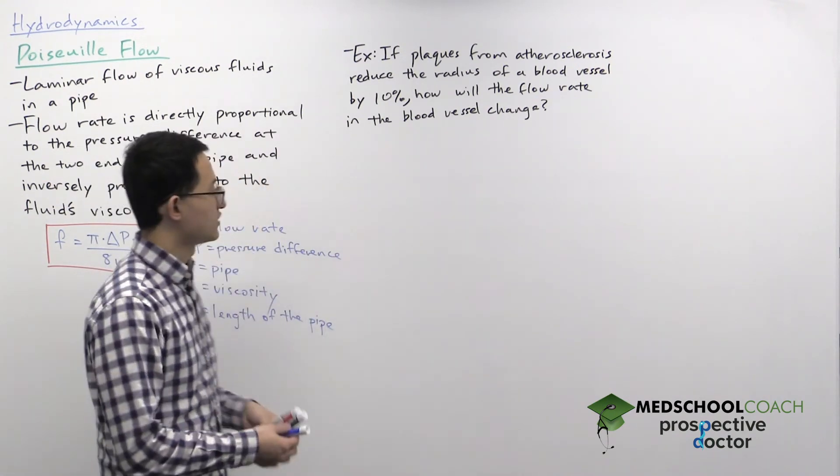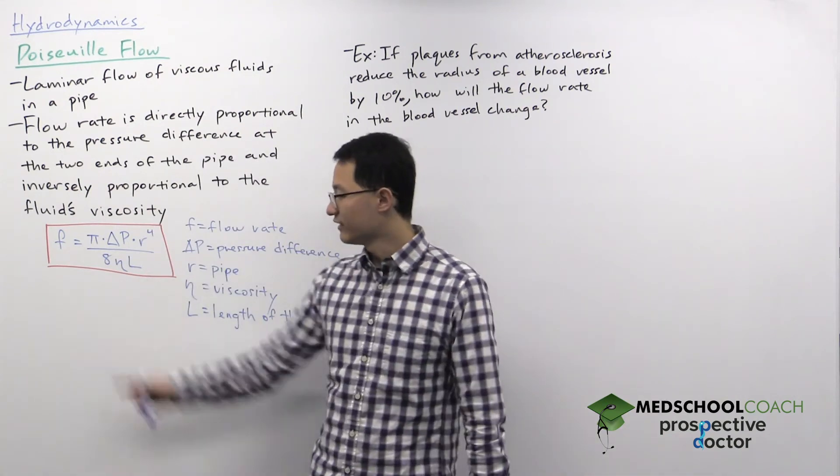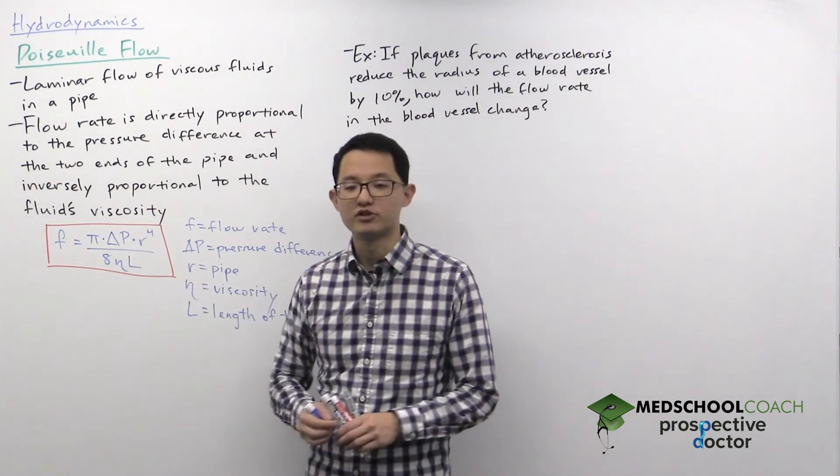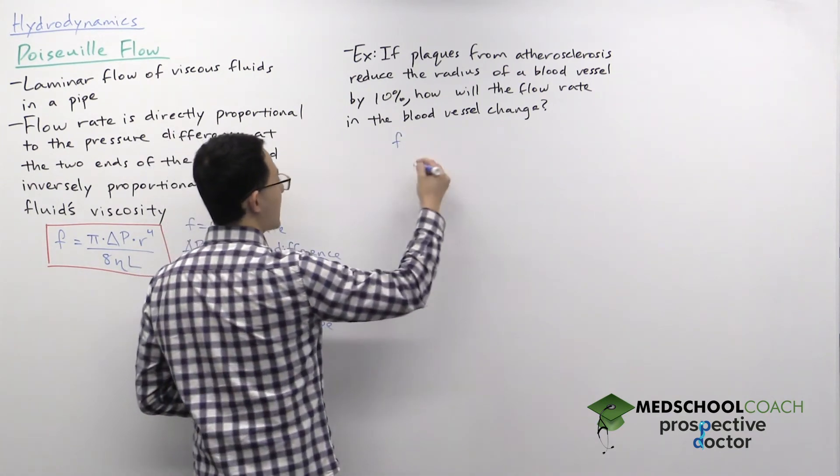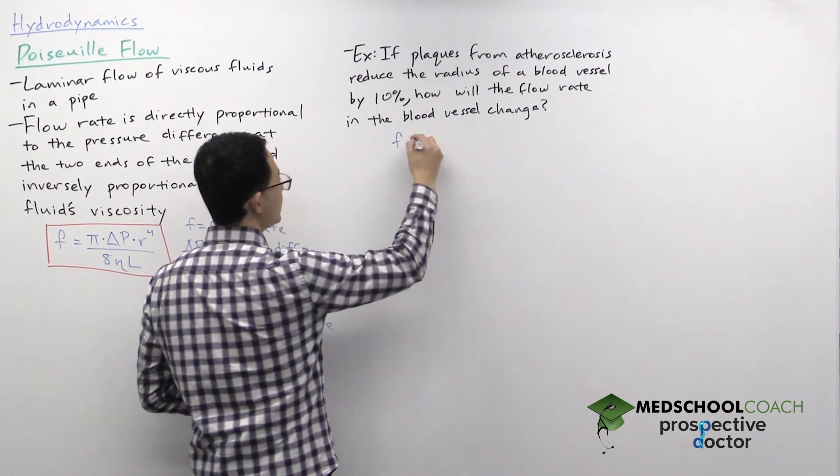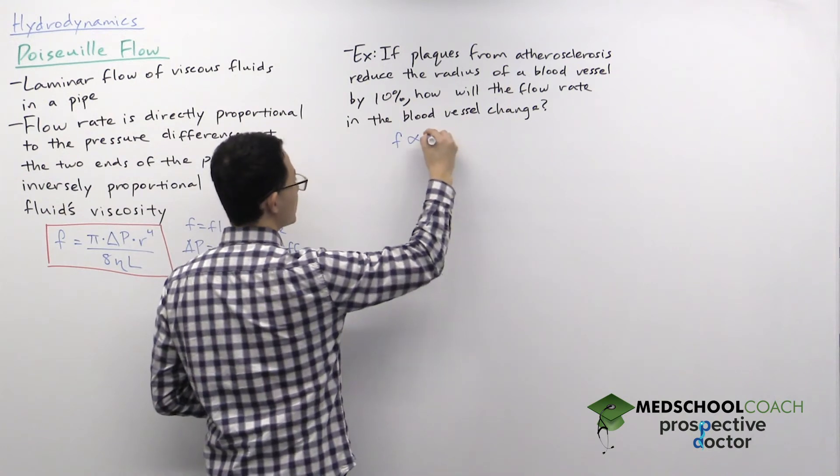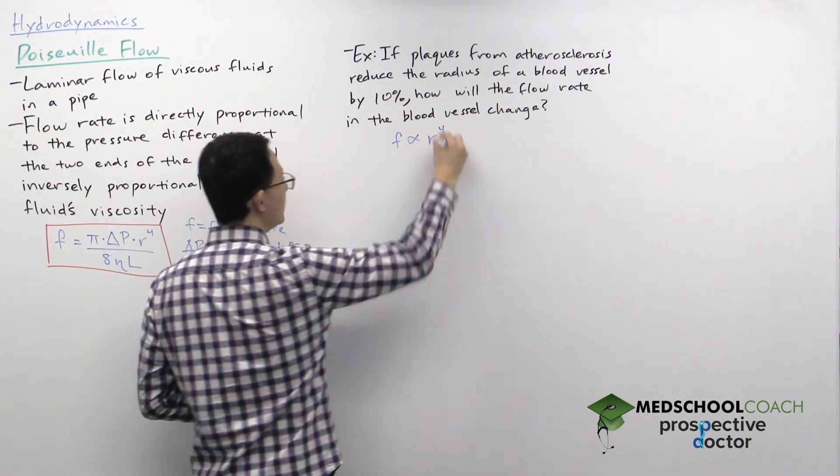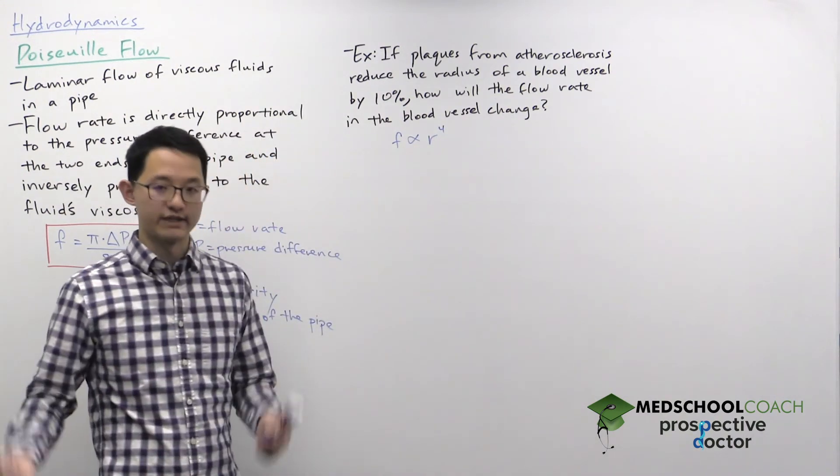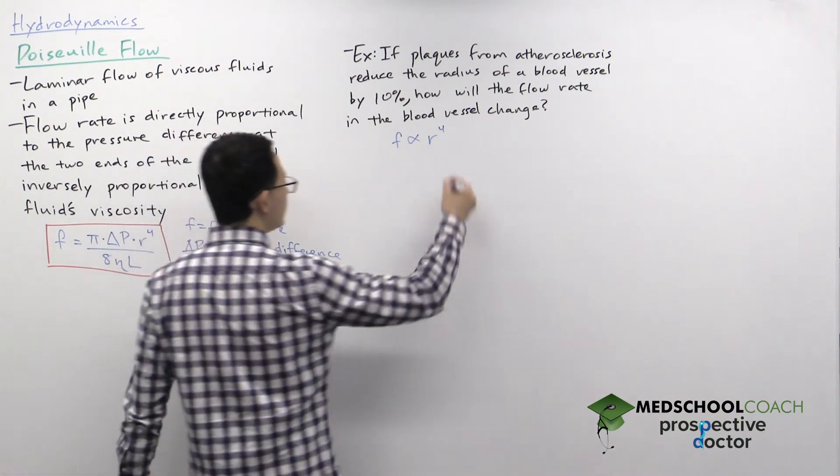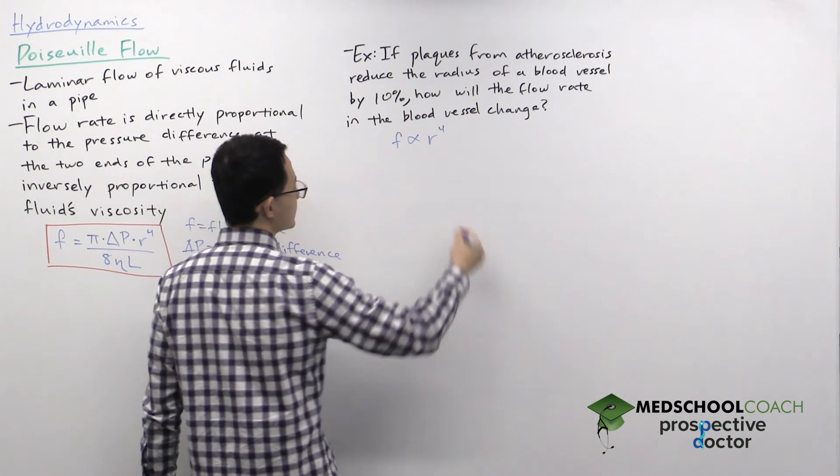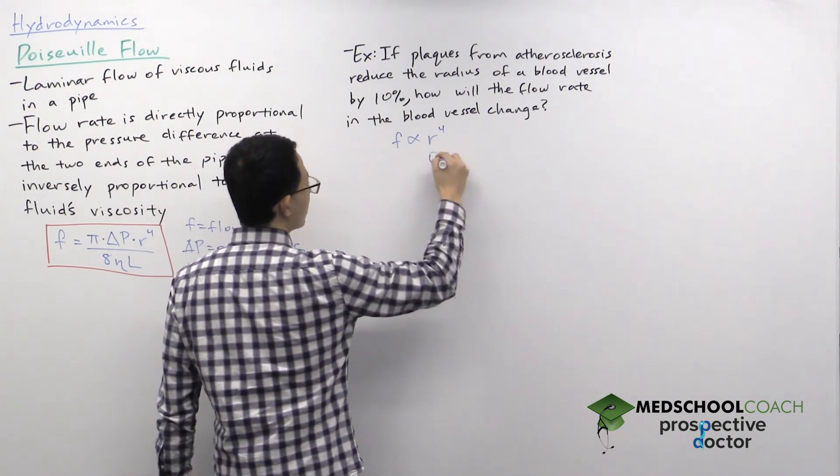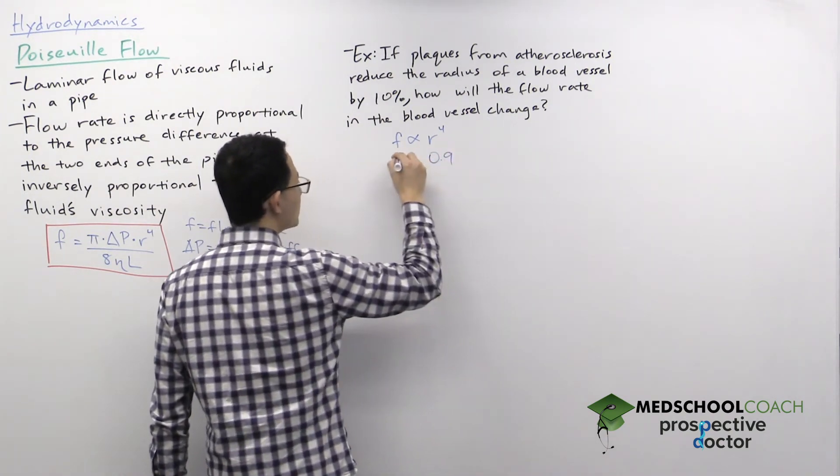From Poiseuille's law, we know that the flow rate is directly proportional to the radius to the power of four. So however the radius changes, if we multiply that change or take that to the fourth power, that will tell us how the flow rate changes. Here it is decreased by 10%, so that means the radius is now 90% or 0.9 of its original value.